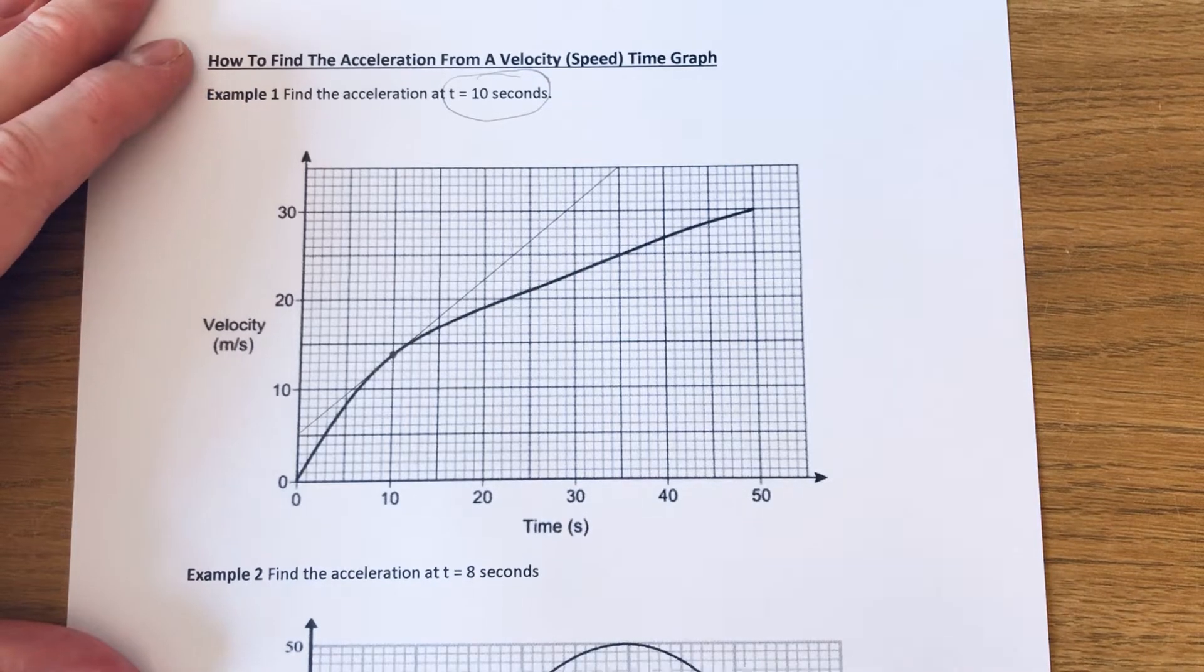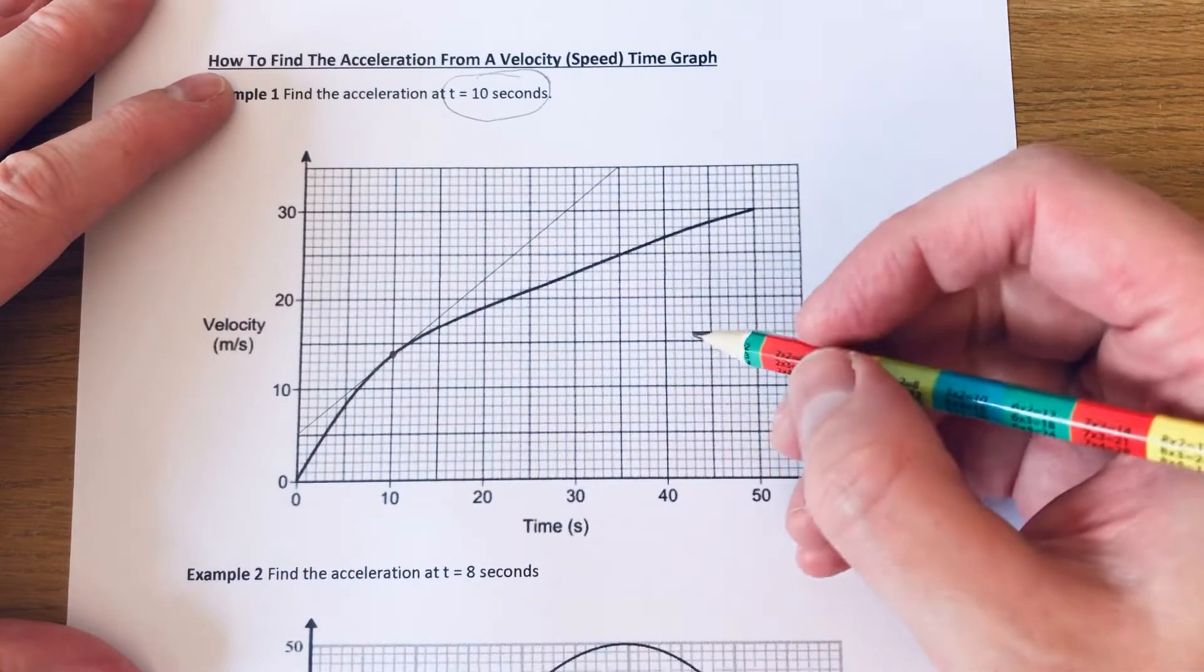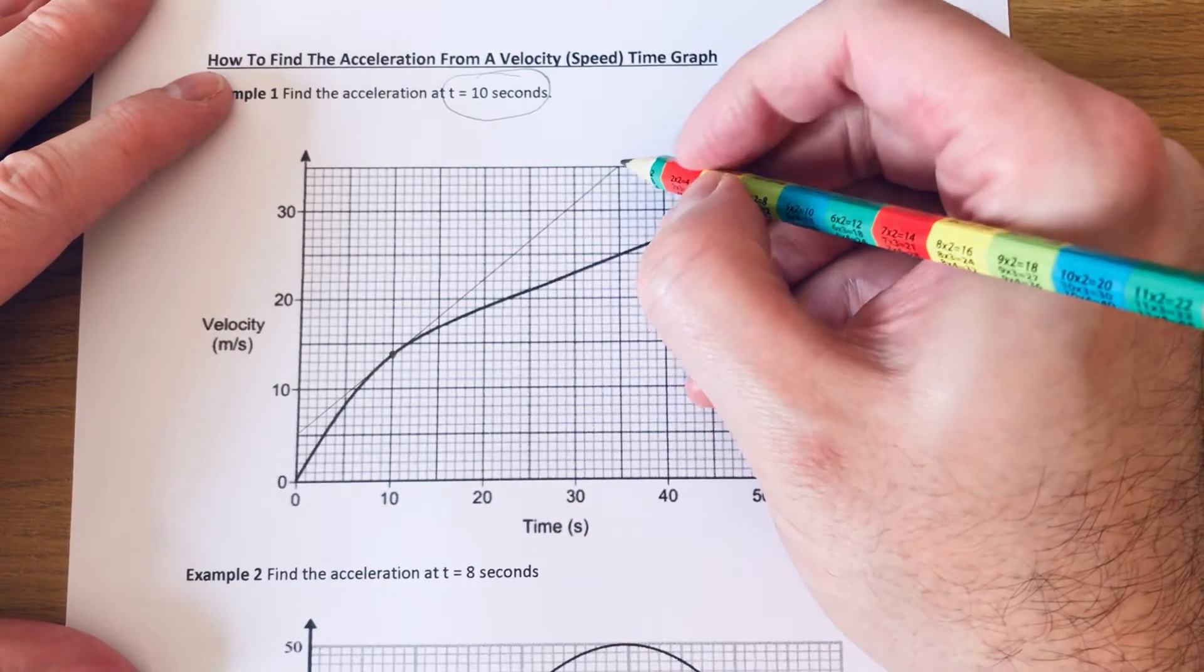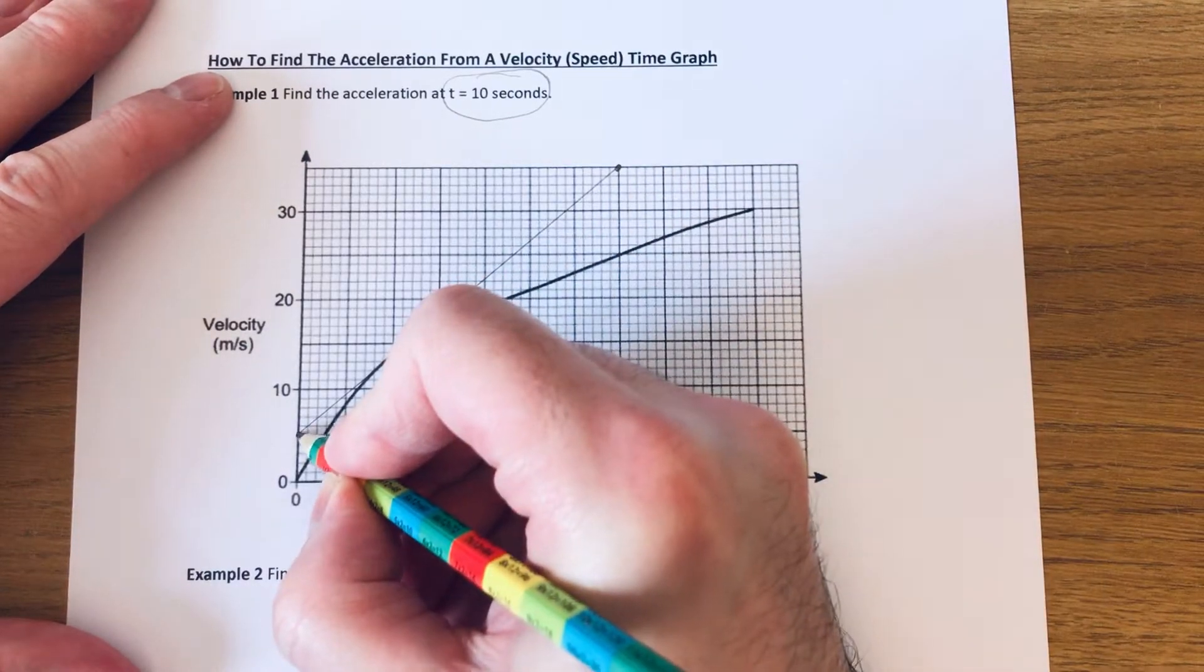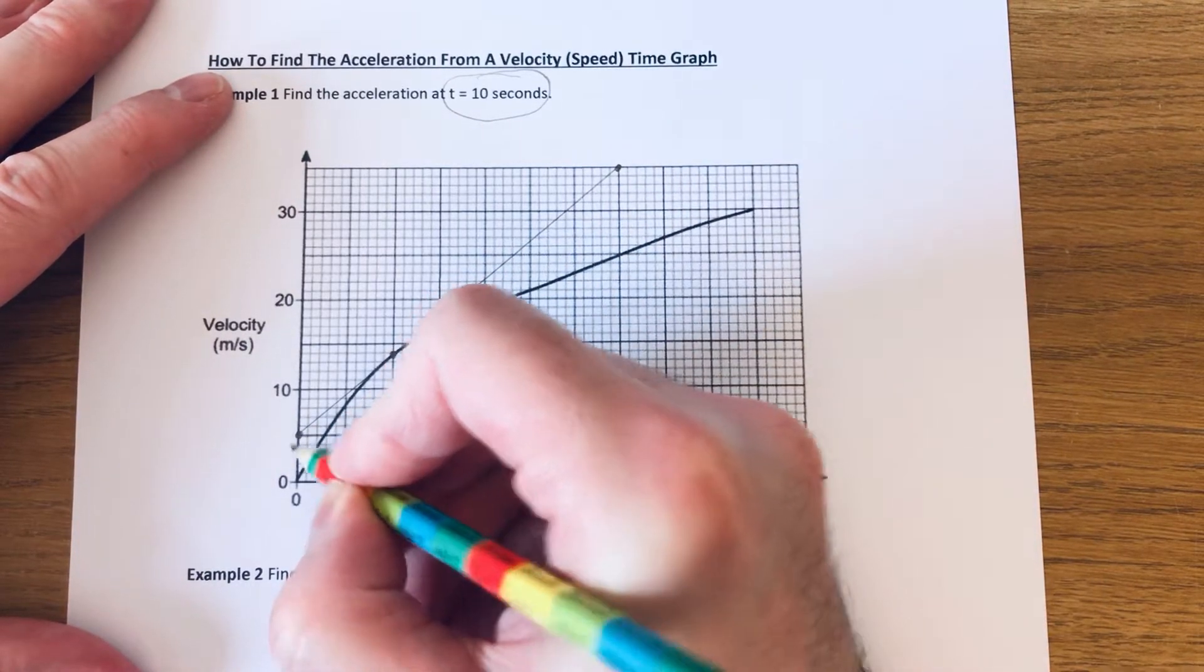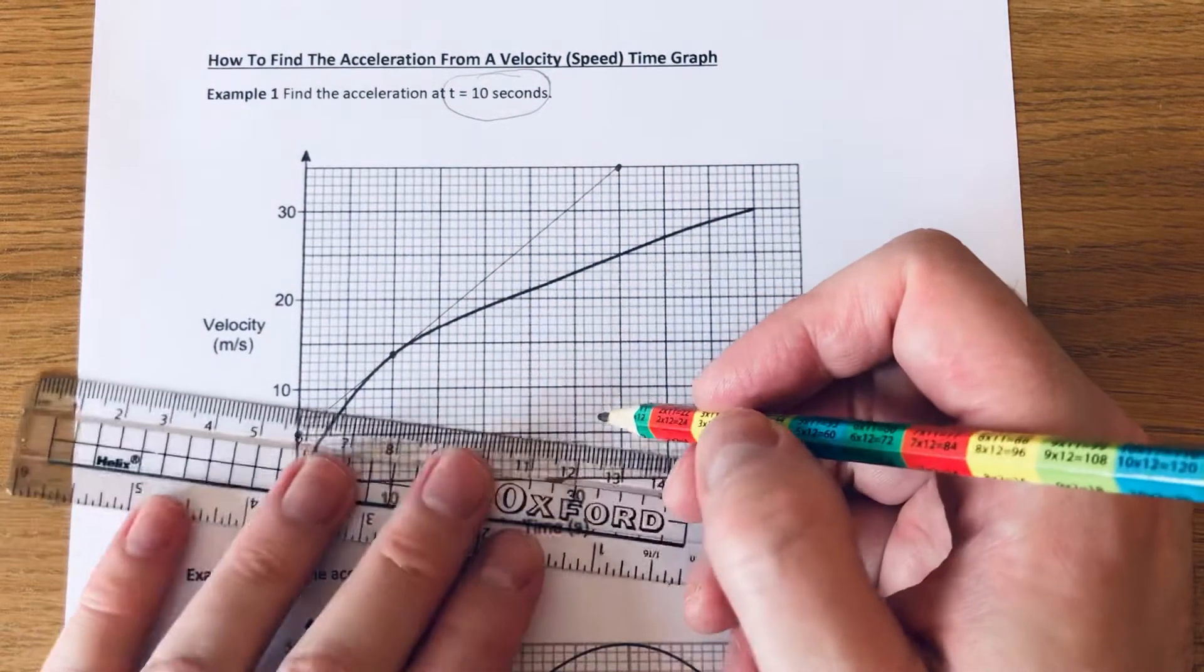So the gradient of this tangent will be the acceleration. To get your gradient you just need to turn it into a right angle triangle, that straight line. I'm going to use the two points at the bottom and the top. So if we make our right angle triangle out of these two points.